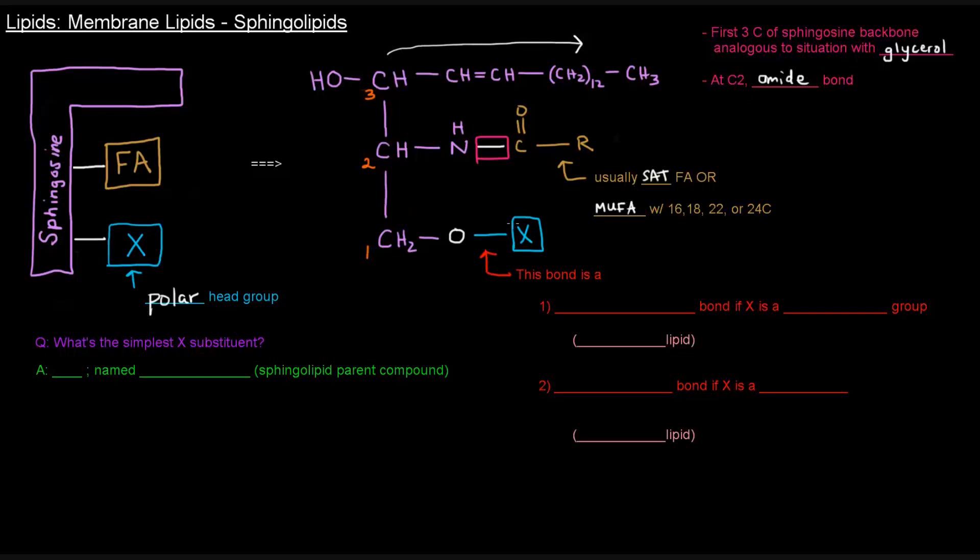Now, over here at the one carbon, we have this O, and we have this polar head group being attached. So the nature of this polar head group basically determines what kind of sphingolipid we have.